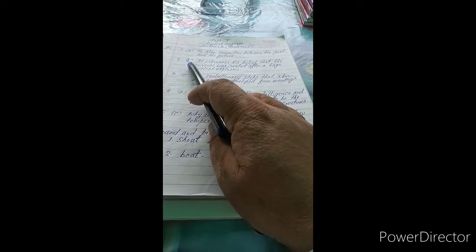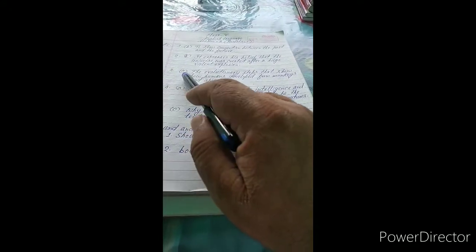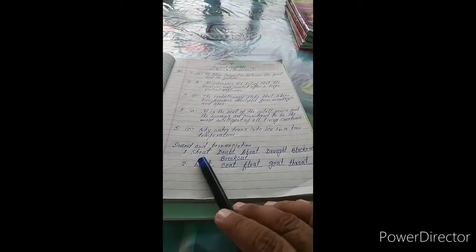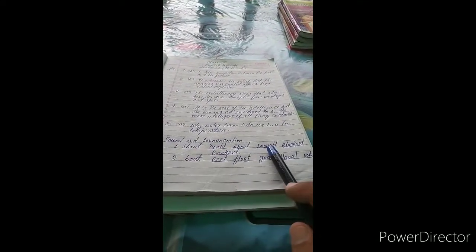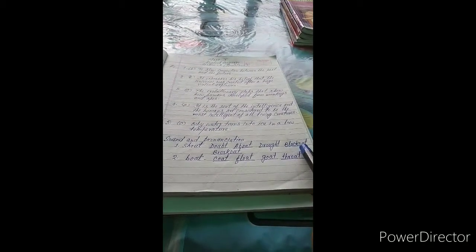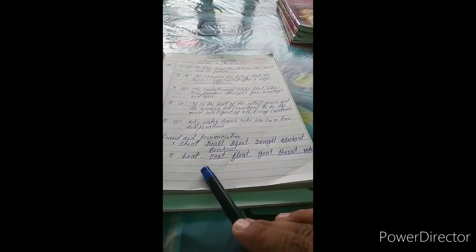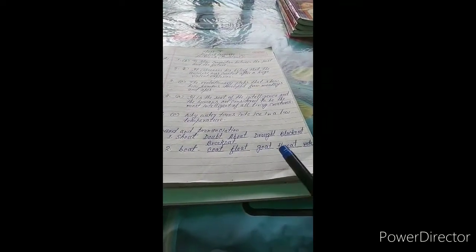Let me review: For the comprehension questions, we tick B for question one, B for question two as most suitable, C for question three as most suitable, A for question four, and C for question five. For sounds and pronunciation section B, for 'shout' we have doubt, about, drought, blackout, breakout. For 'boat' we have quote, float, goat, throat, boat.